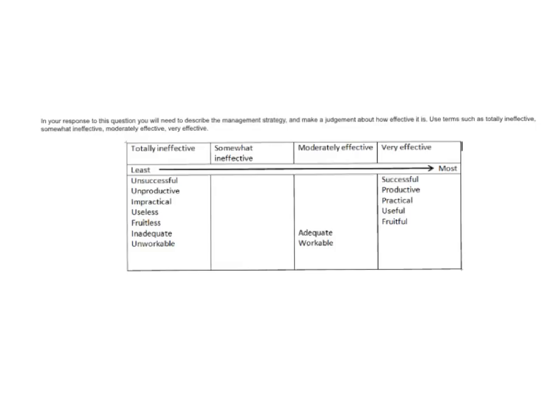When evaluating, you need good vocabulary. Here's a table of useful terms: if you feel a management approach is effective, you can use words like 'successful,' 'productive,' or 'useful.' Along a spectrum, you might use 'somewhat effective,' 'moderately effective,' 'somewhat ineffective,' 'unsuccessful,' 'unproductive,' 'unworkable,' or 'inadequate.' These are all great terms to use in a response for this dot point when evaluating management strategies.